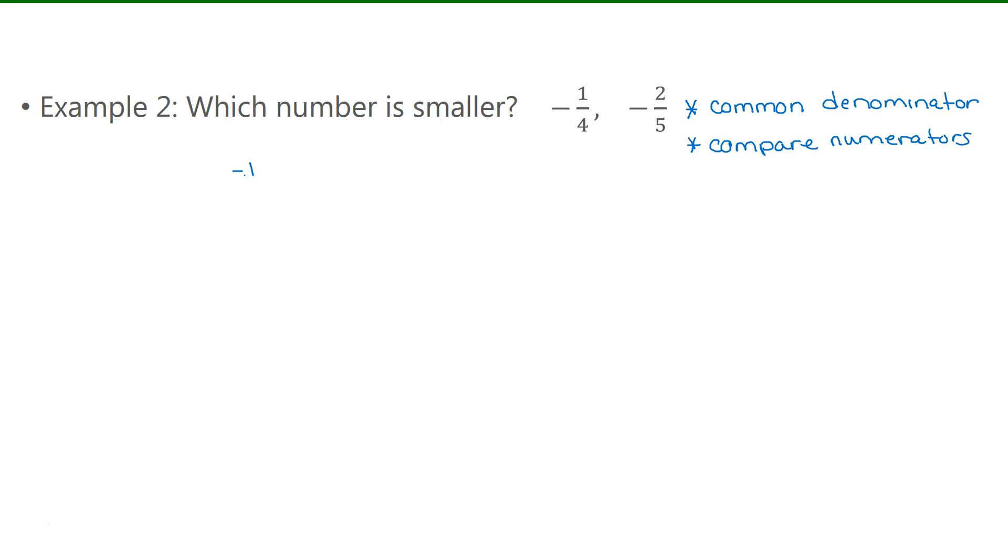Now if we look at the denominators there, 4 and 5, the common denominator will be 20. So I'm going to multiply the first fraction by 5 over 5, to give me negative 5 over 20. The second fraction can be multiplied by 4 over 4, to give you negative 8 over 20. So if you just look at the numerators there, negative 5 and negative 8,